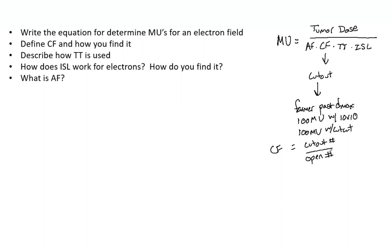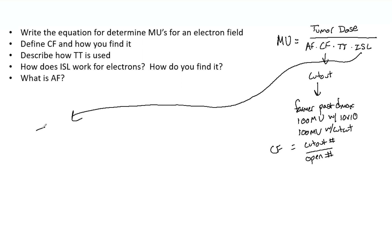Know what treat-to is and how it can be used in the clinic. Now the inverse square law for electrons is equal to the virtual source distance plus dmax, all divided by the virtual source distance plus G plus dmax, and all of that is squared.